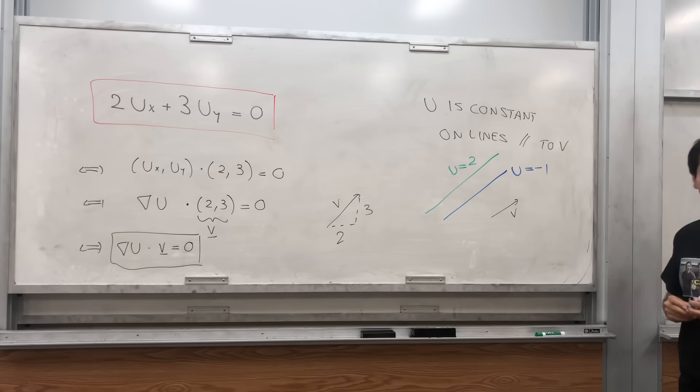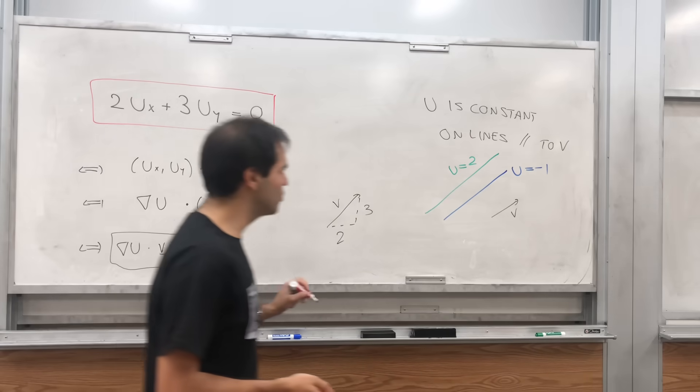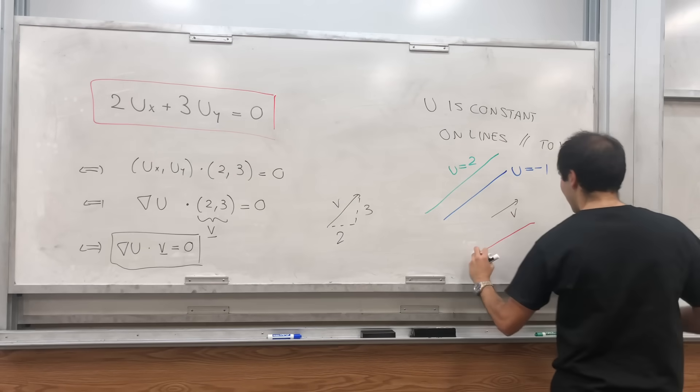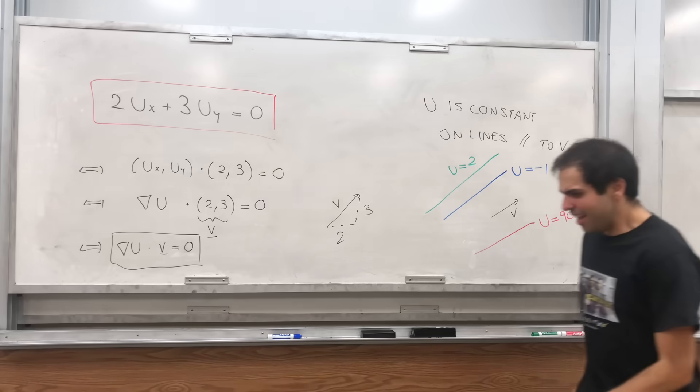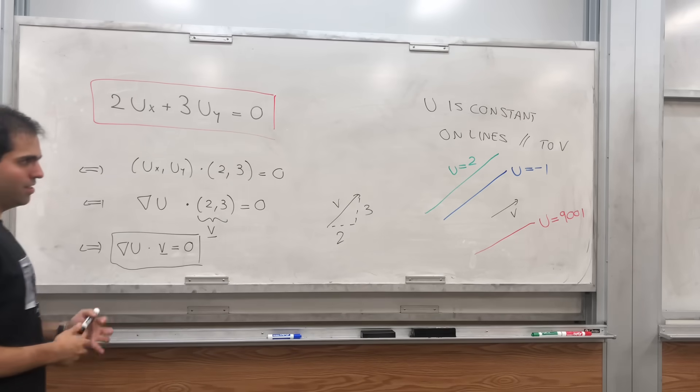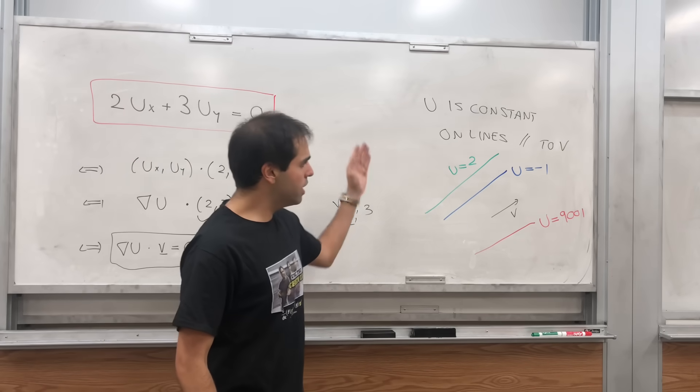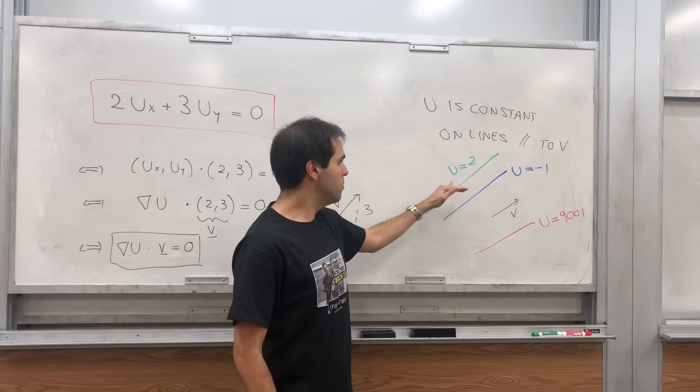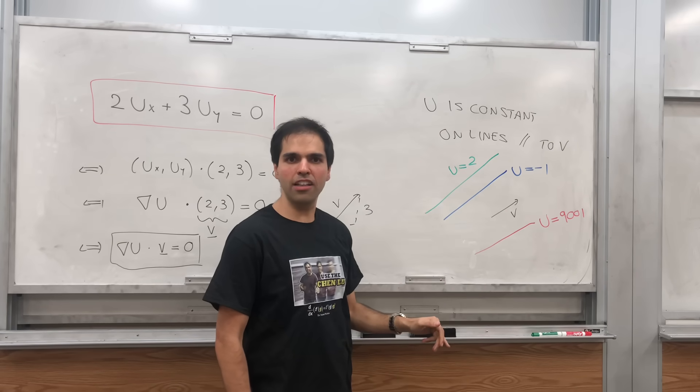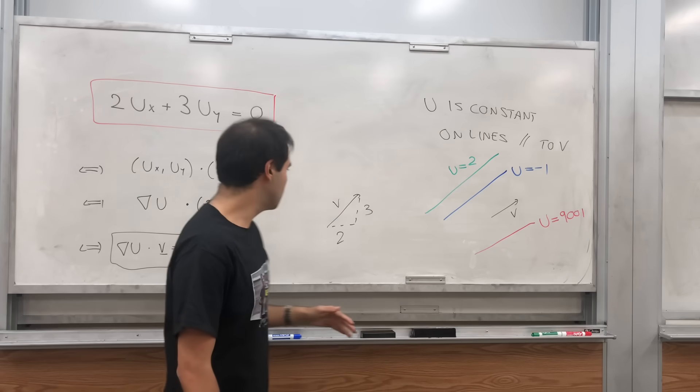The values are completely arbitrary, and in fact, any value of u you pick along this line will actually be a solution to this equation. For instance, here on this line, u might be 9,001, because it's over 9,000. And so basically, what we want to say, we want to see what's our general solution, literally any function that is constant on those lines. Because no matter which value you pick, it will still be a solution to your PDE.